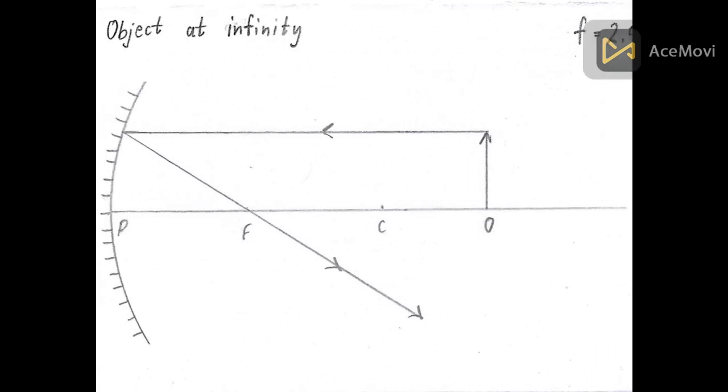When the object is at infinity, we get the image at focal point or at focus. The image is point sized and real.